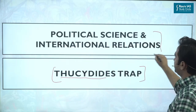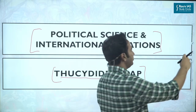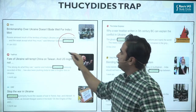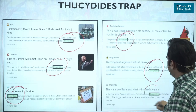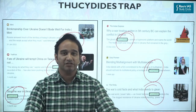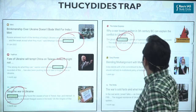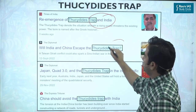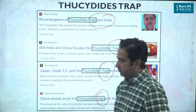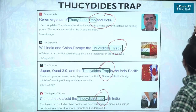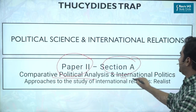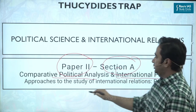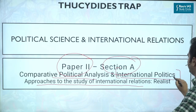We are going to understand this from the perspective of Political Science and International Relations optional examination. The Thucydides Trap is being continuously used within contemporary politics. It has been used in reference to the Russia-Ukraine war and also in reference to the India-China relationship. It is in this context that the Thucydides Trap becomes important for Paper 2, Section A, Comparative Political Analysis or specifically International Politics, under the subsection approaches to the study of International Relations — Realism.